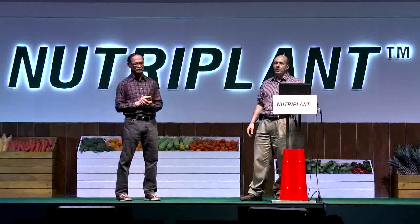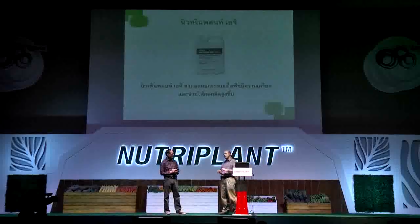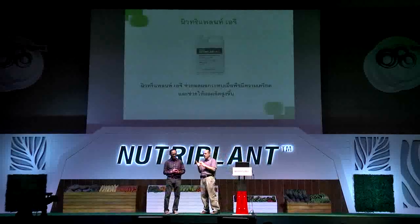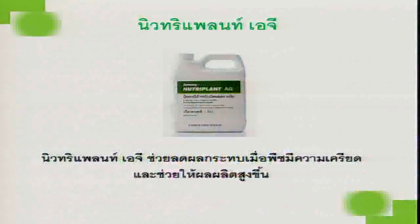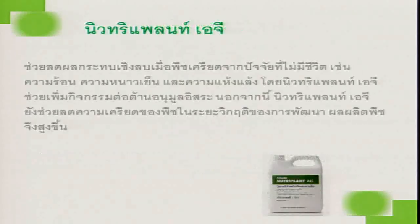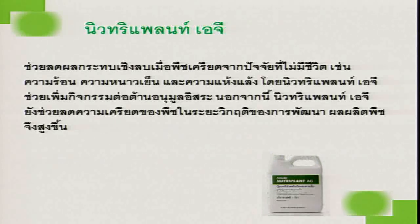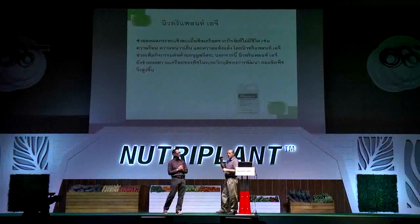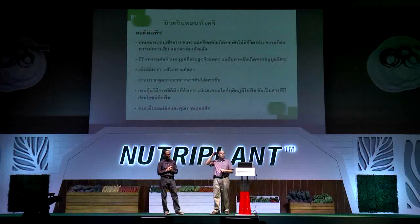Let's go to the number one product, AG. Why is this so important? Because one of the things we want to accomplish is to help the plant overcome stress, but at the same time we are adding nutrients so the plant can grow under those stressful conditions. The main attribute of AG is that it reduces stress.